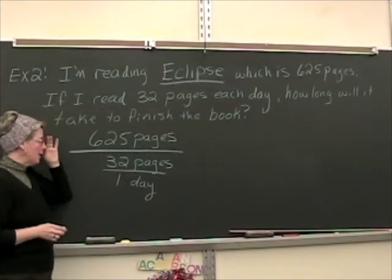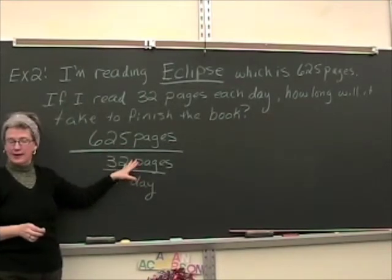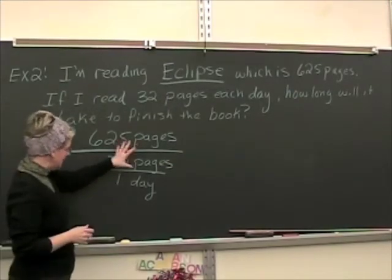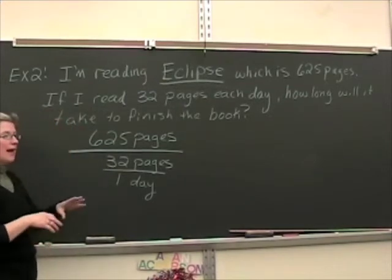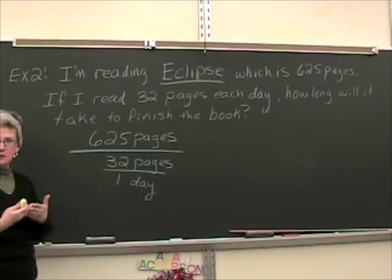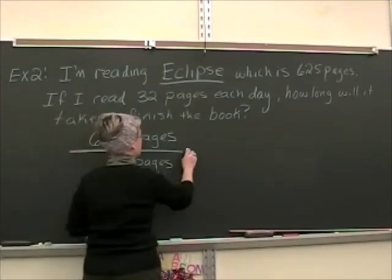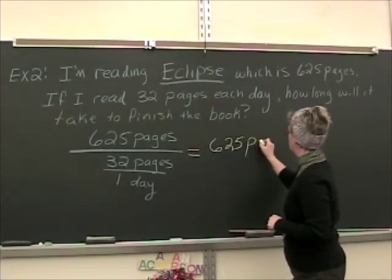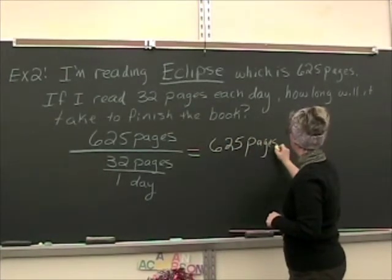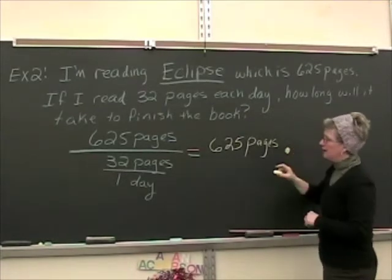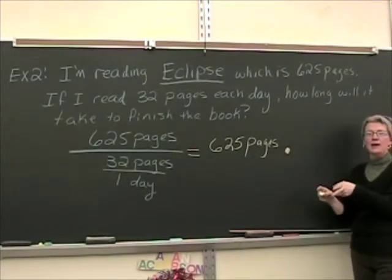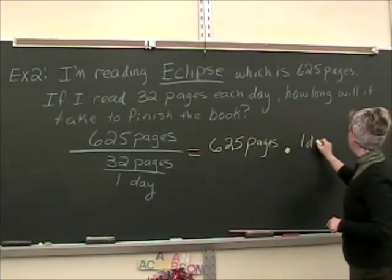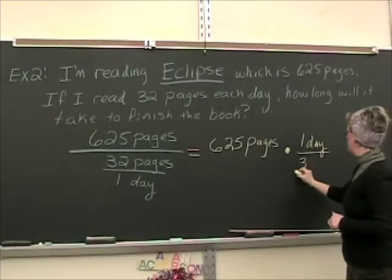Remember that to divide by a fraction is the same thing as multiplying by its reciprocal. So I'm going to take this division problem and rewrite it as a multiplication of the reciprocal problem. Watch what happens when I do that. I'm going to get 625 pages times—now, the reciprocal of 32 pages per day is one day over 32 pages.